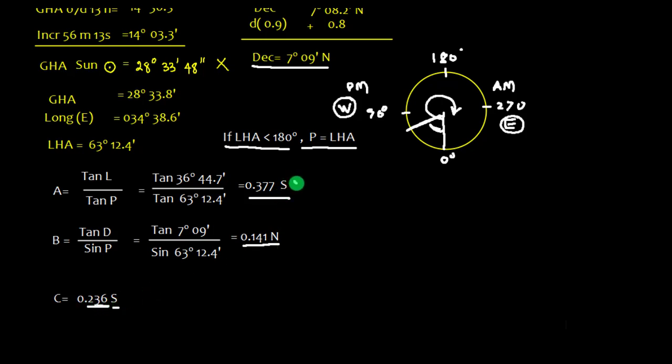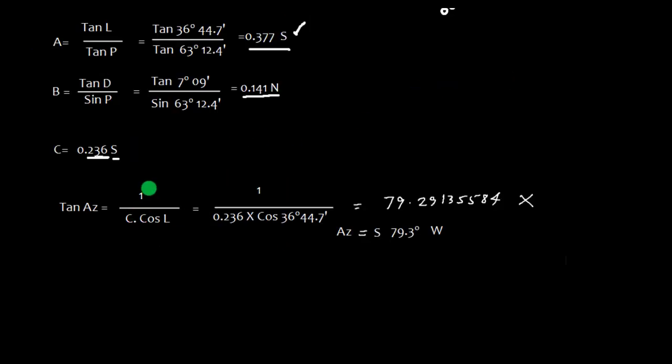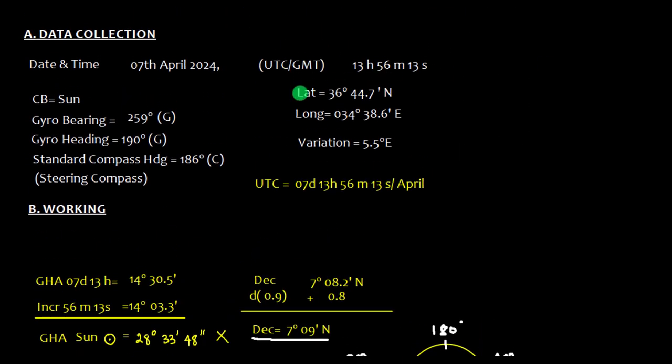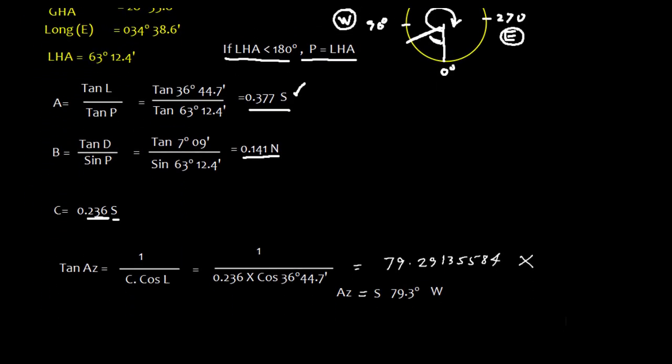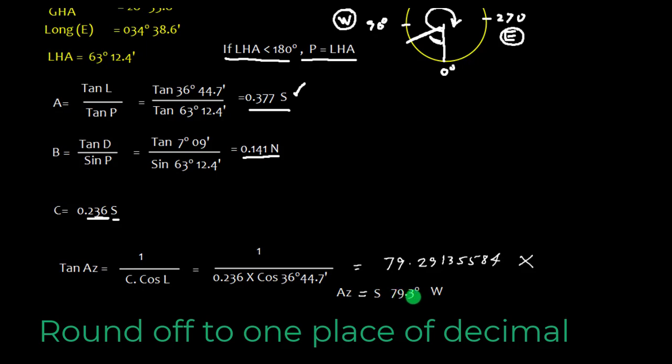Let's find out tan azimuth. Tan azimuth is 1 upon C into cos latitude. The value of C we have obtained just now, 0.236, and the cos latitude: latitude is 36 degree 44.7. Let's cross check again, latitude is 36 degree 44.7. So we get this value. There is no need to write so much of digits, simply round off to one place, so it is 79.3 degree.